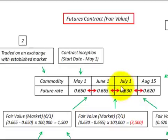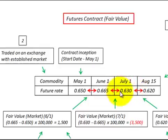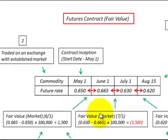Looking at the next period, July 1st, we compare the future rate on July 1st with the future rate of the previous period, June 1st. In this case, there was a reduction in the future rate, so we'd be receiving less money. We take the difference between .630 for the July date and .665 for the June date, times our quantity, and we had a loss — a reduction of $3,500.